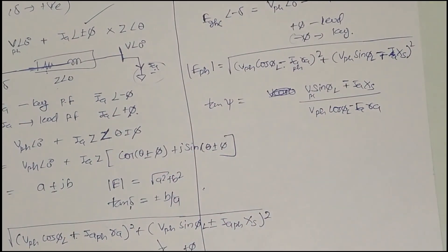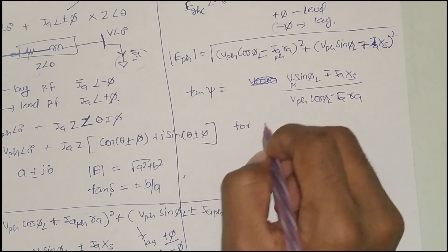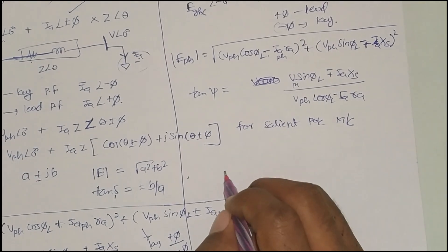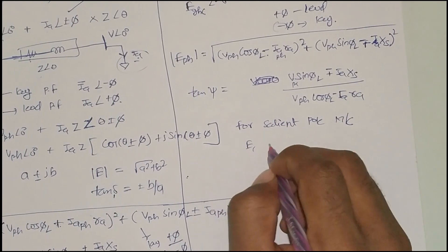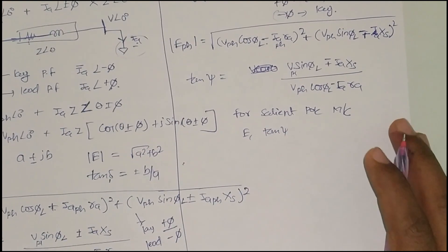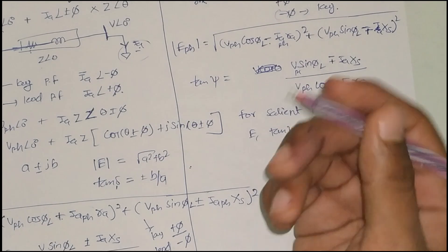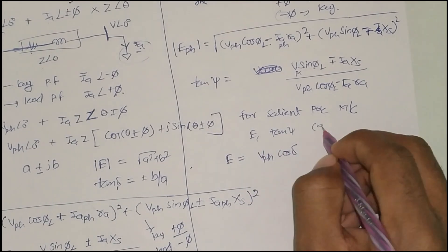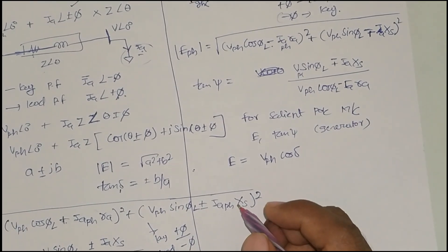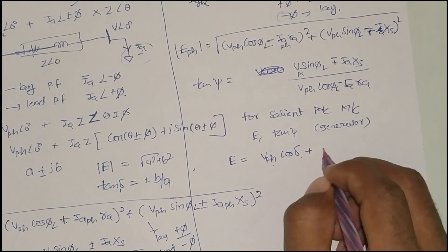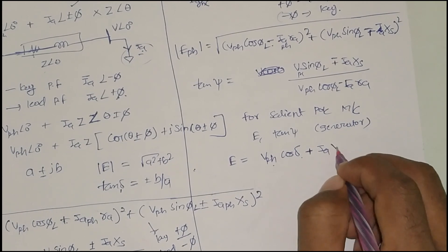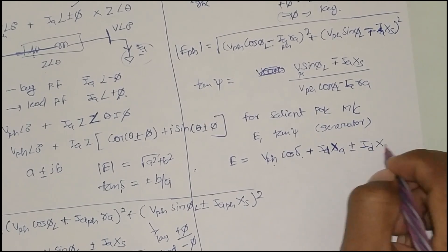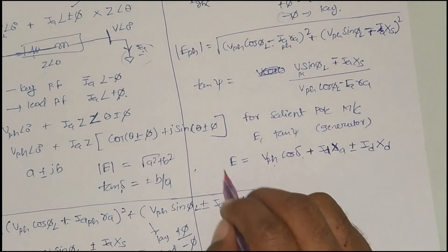Next is for the salient pole machine. There is quite a difference between cylindrical and salient pole machines. For the salient pole machine (taking generator first), E is calculated as: E_phase equals V_phase cos delta plus I_a R_a plus or minus I_d X_d. I will give a trick to remember this.